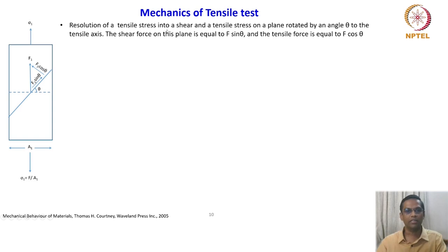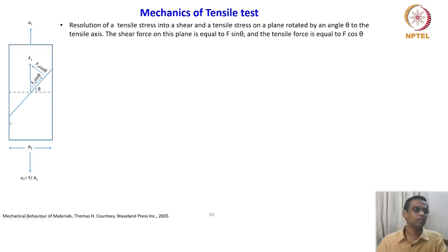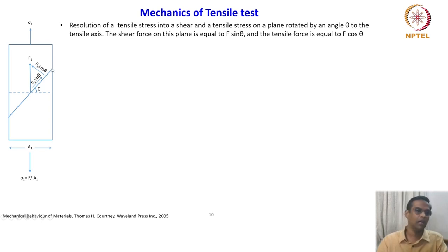Resolution of a tensile stress into a shear force and a tensile stress on a plane rotated by an angle theta to the tensile axis. The shear force on this plane is equal to F sin θ and the tensile force is equal to F cos θ. The shear plane at 45 degrees is the plane where maximum shear stress acts—that is the plane on which crystals deform by slip. The force axis gives F₁ sin θ because cos(90° − θ) = sin θ.